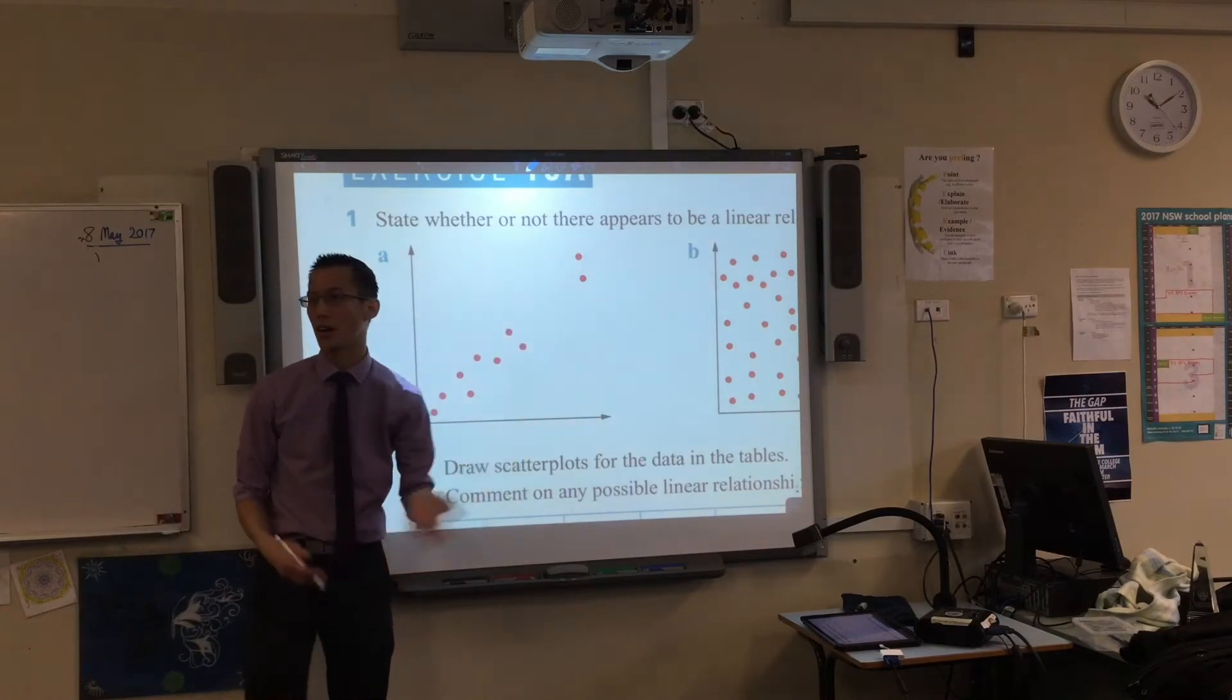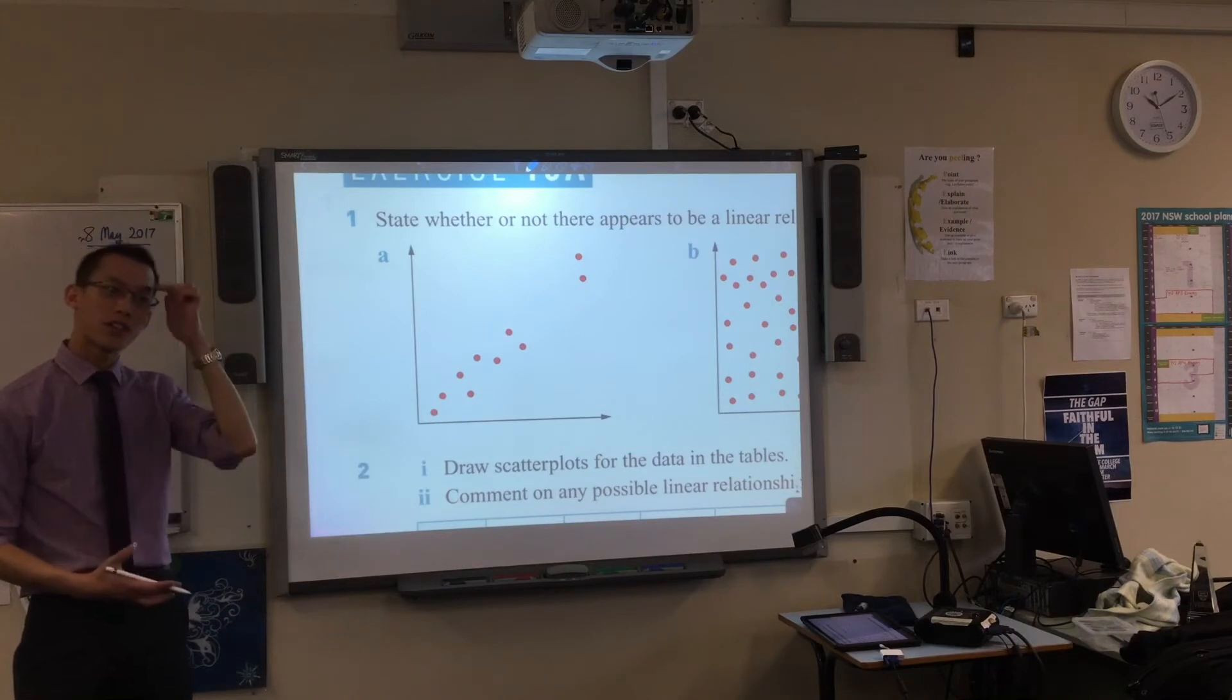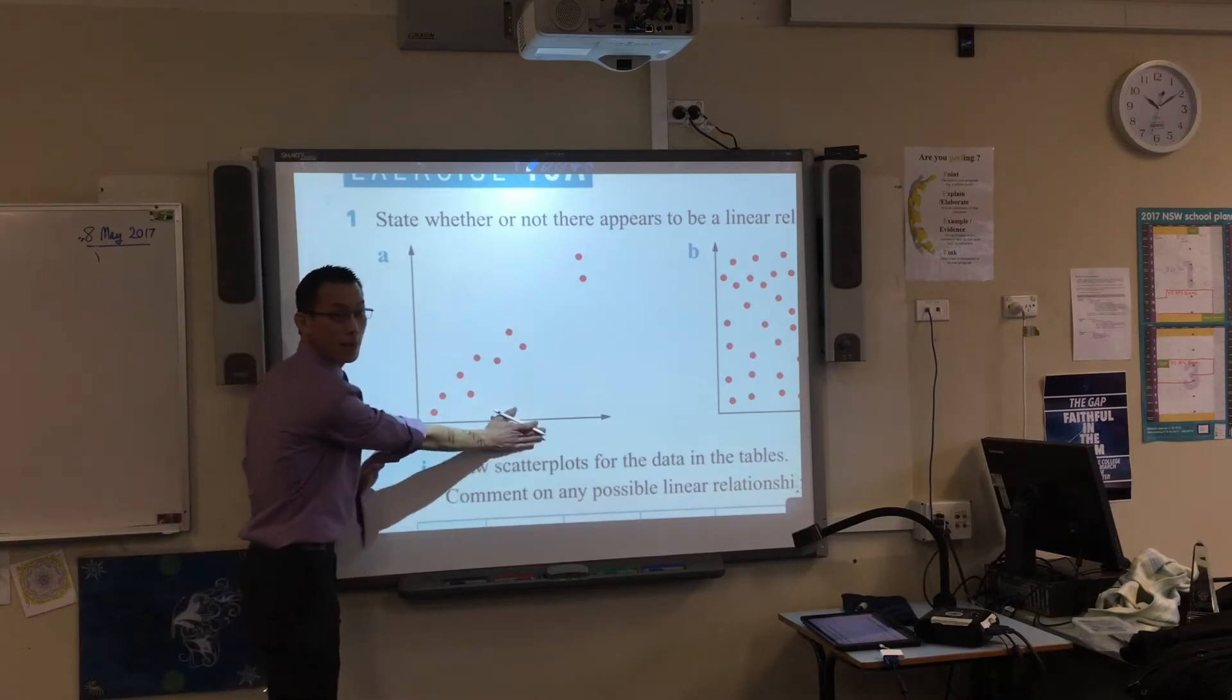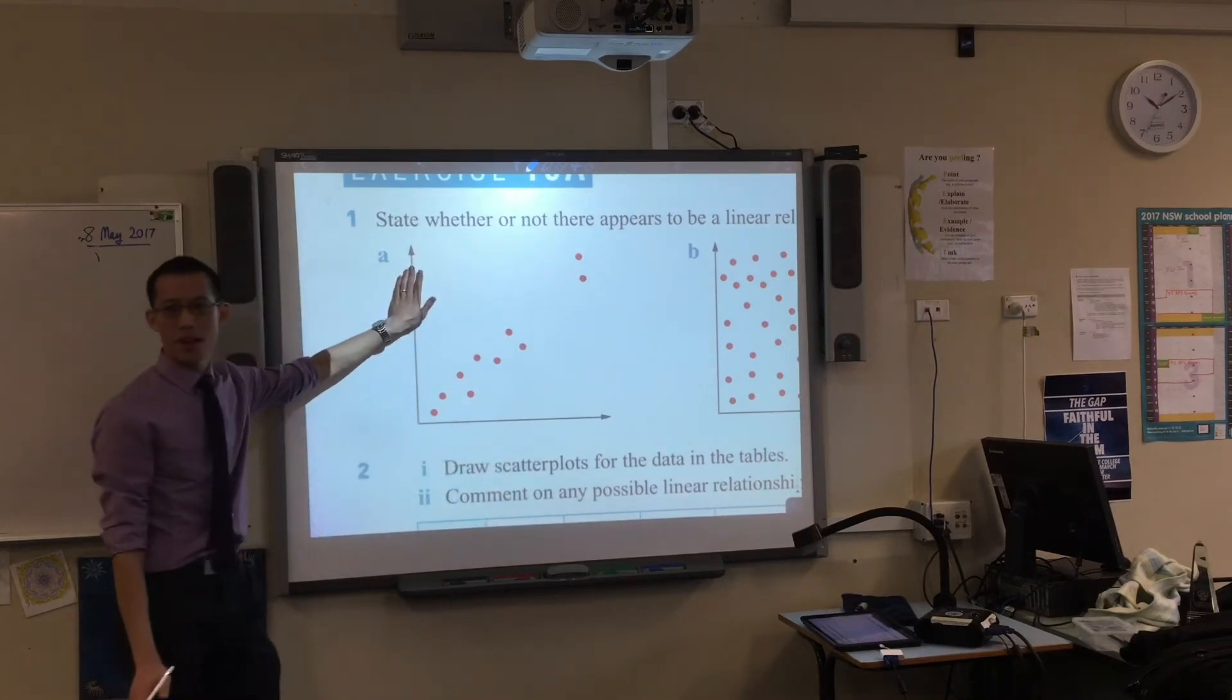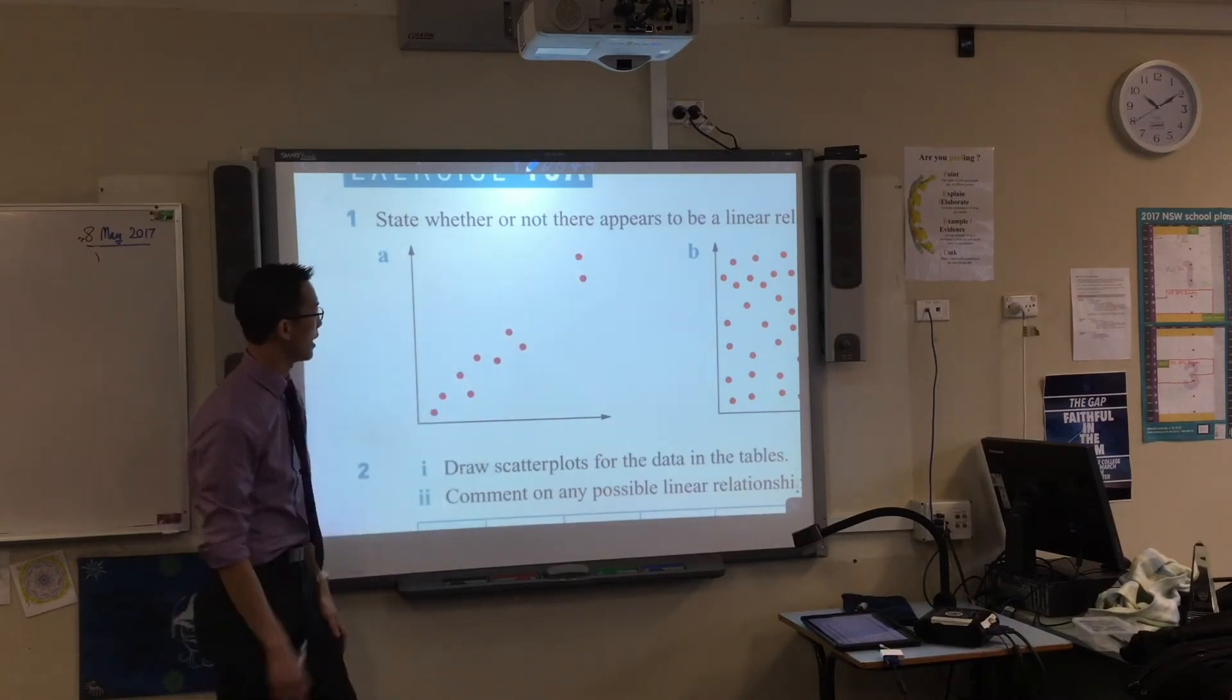So when you have gaps in your data, what do you do? I'm going to introduce this idea of the line of best fit. Maybe you have heard of it before, it's a very common idea. But if you have data where one variable is related to another, then it should roughly form a line, it should sit on a line.